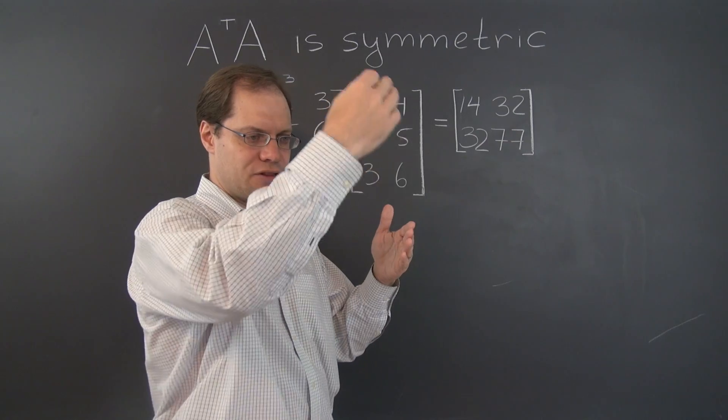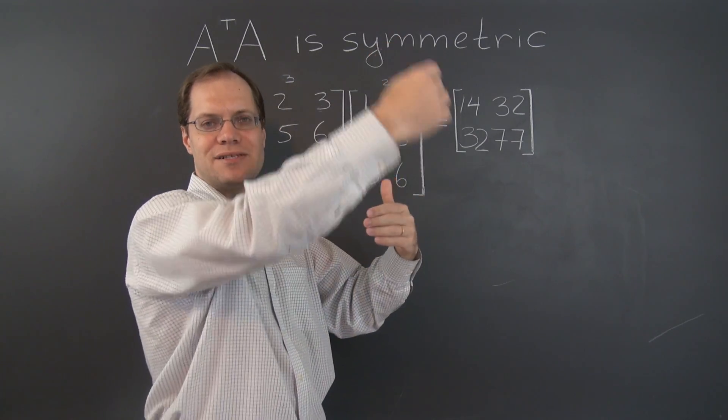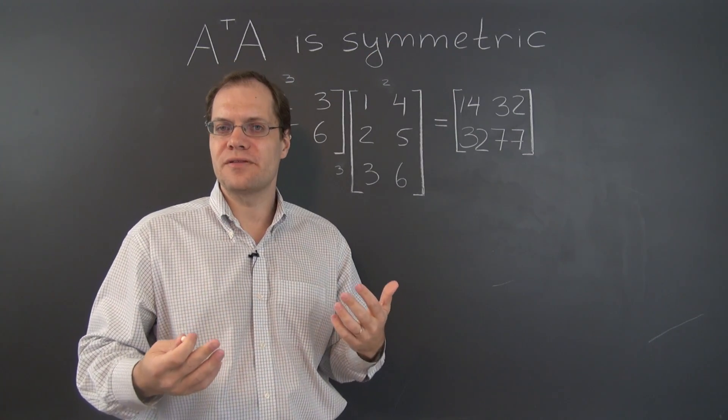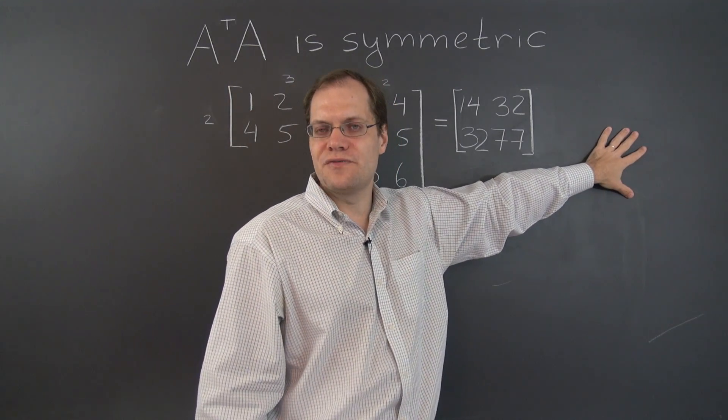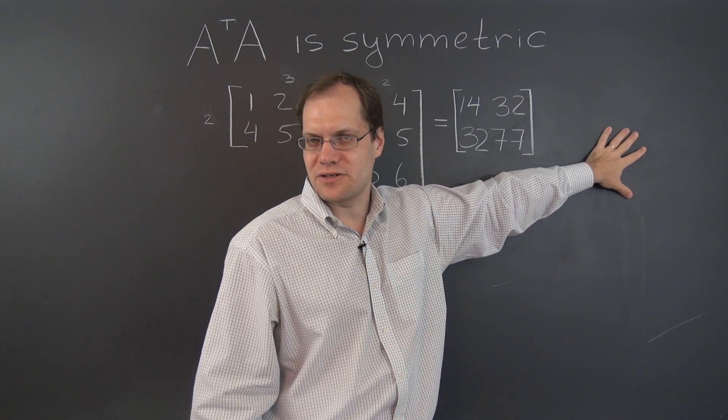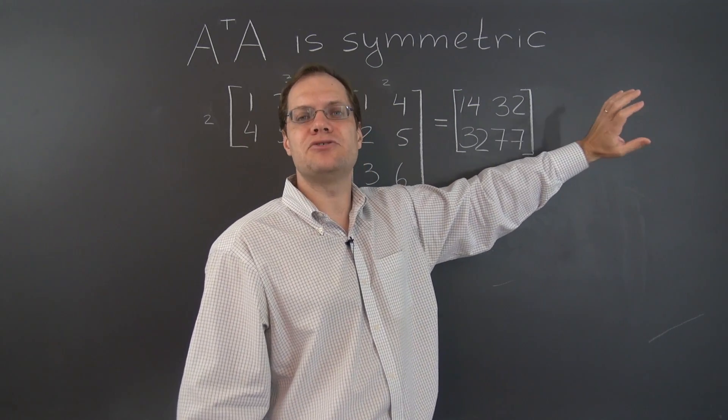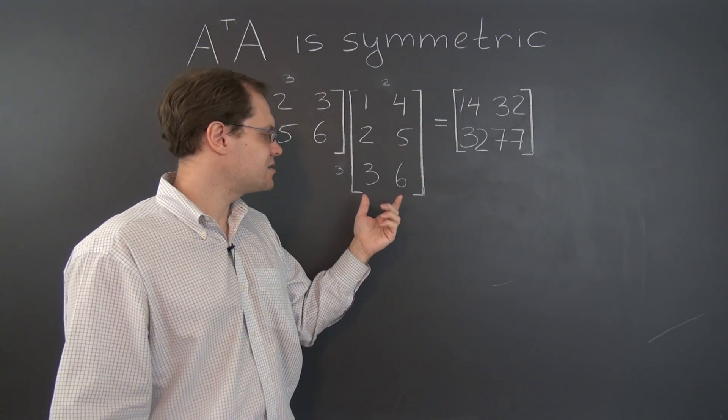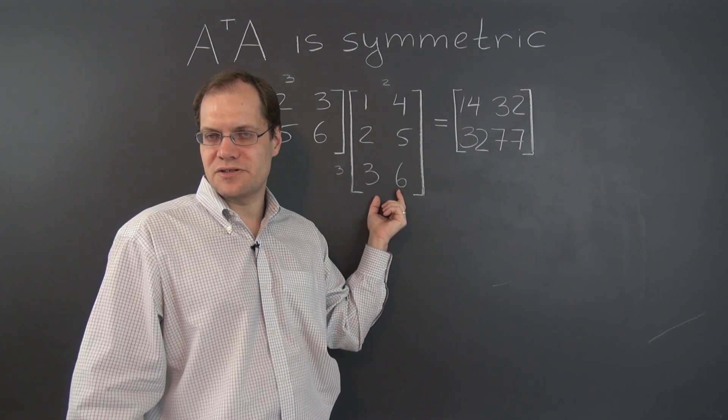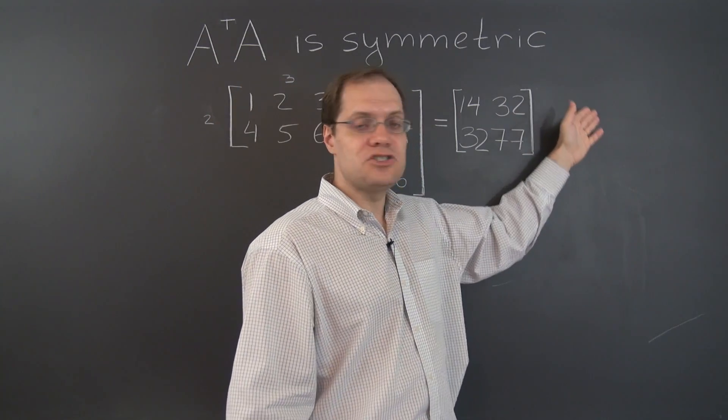You can say first column and third column, or third column and seventh column, and so forth. There are a hundred combinations matching the 100 entries of the resulting ten by ten matrix. And that ten by ten matrix will be full of the pairwise dot products of the columns of this matrix.